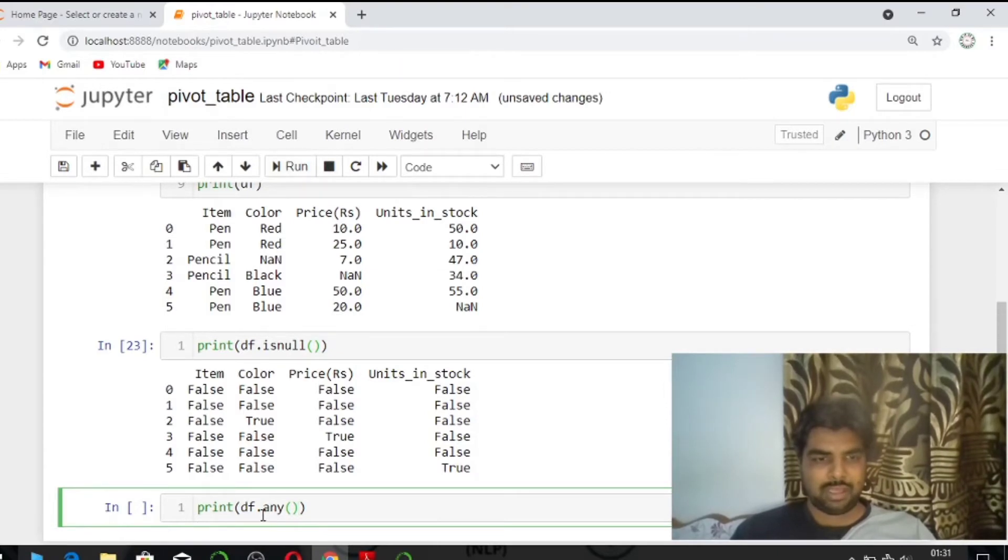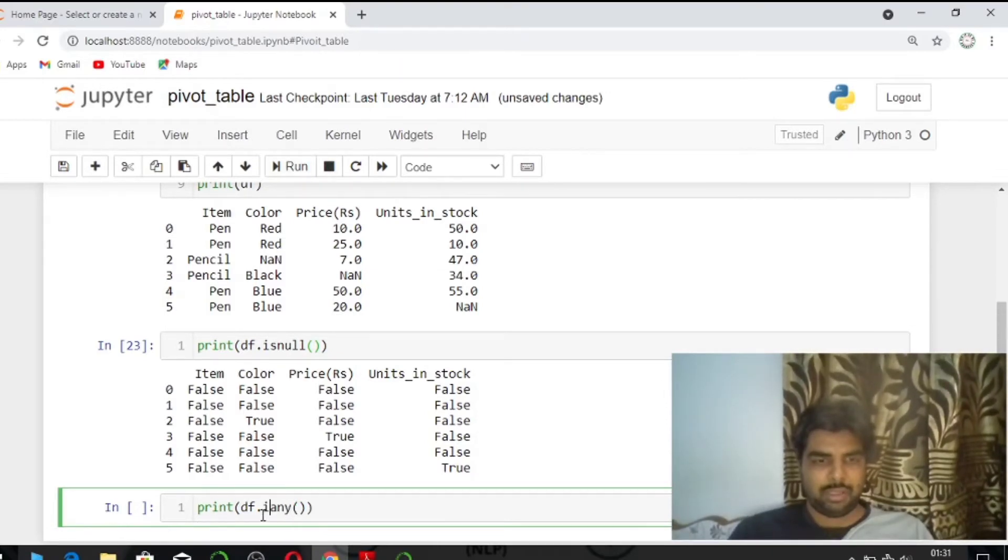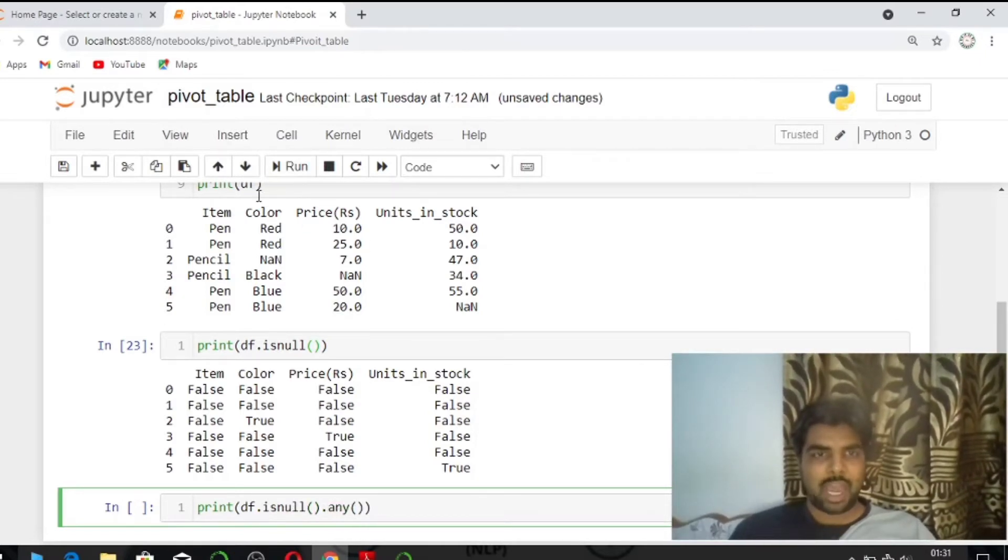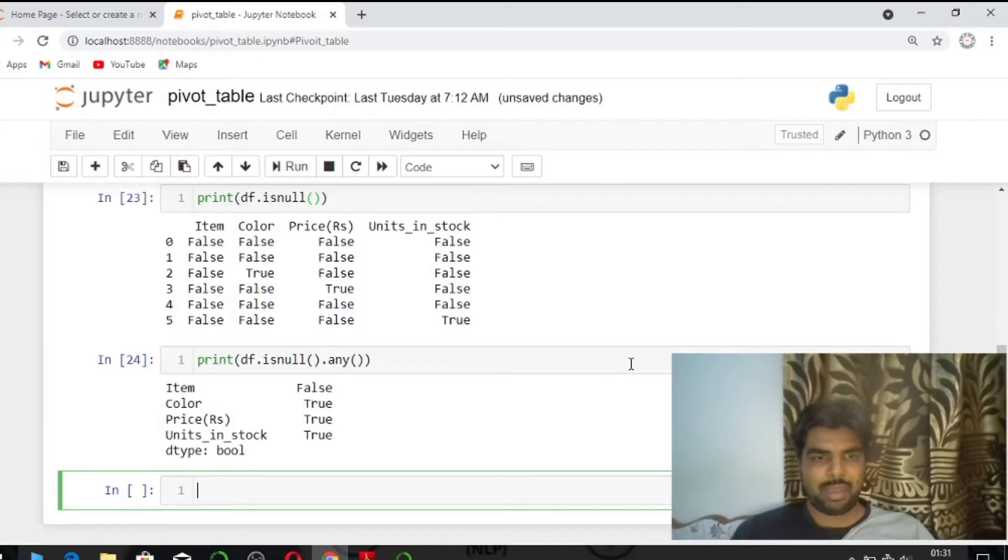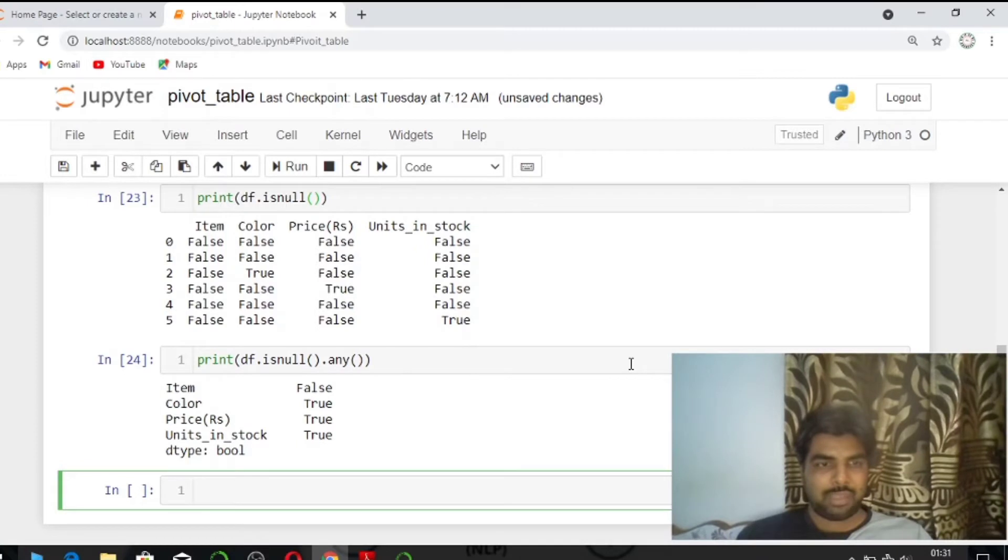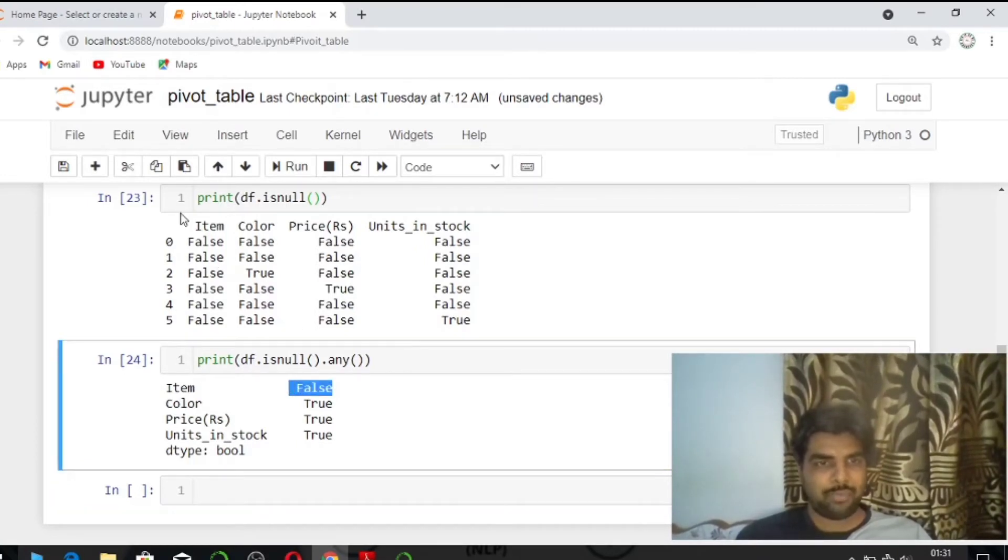Now what we can do is use df.isnull and then use .any. This will check in each column if there are any null values. It returns which columns contain missing values.